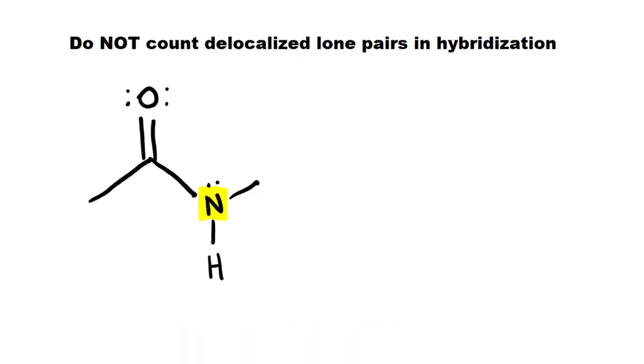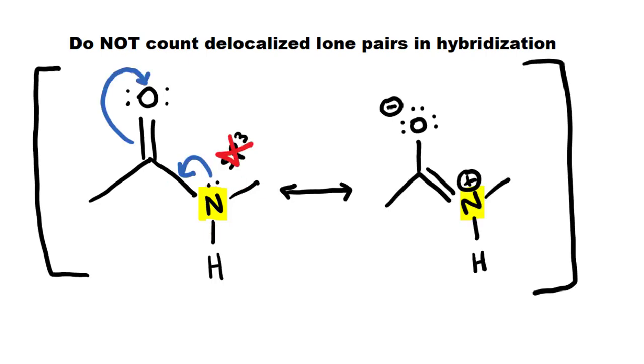Let's look at this nitrogen. It appears to be one, two, three, four, sp3, but that's actually wrong. If you look at the resonance structure, you can see that it really only has one, two, three groups. So the correct hybridization would be sp2.